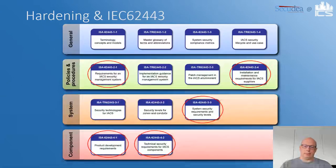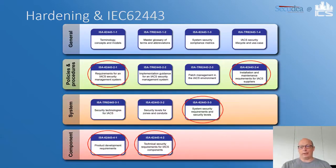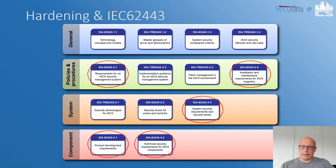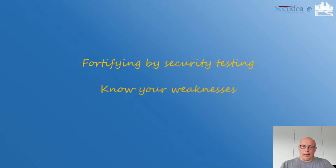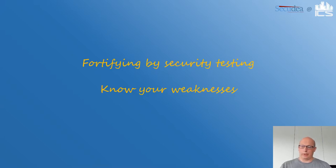This slide shows some indicators in IEC 62443 where hardening is mentioned: in the 2-1, in the 2-4 because that talks about requirements for IACS suppliers, and in the system and component sections where hardening is mentioned for having a secured installation. That was the hardening part.